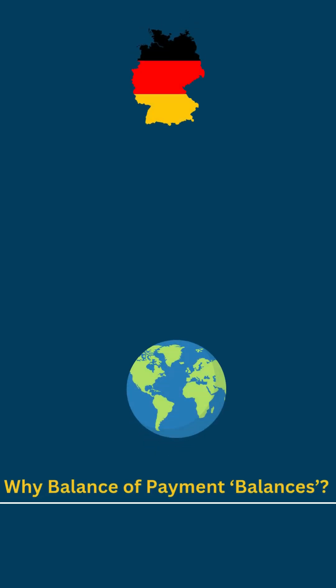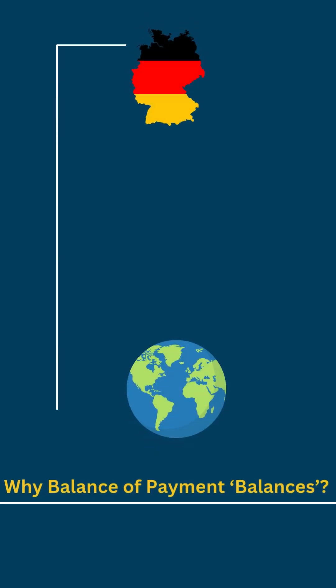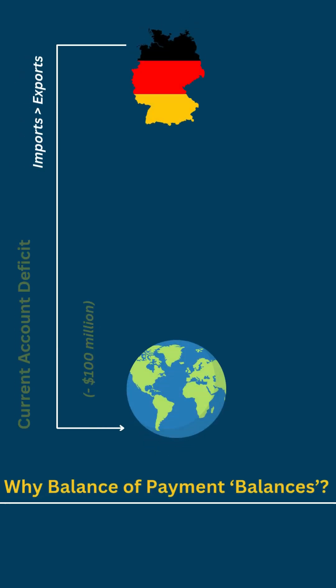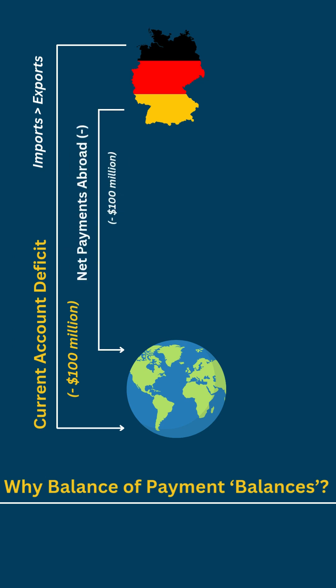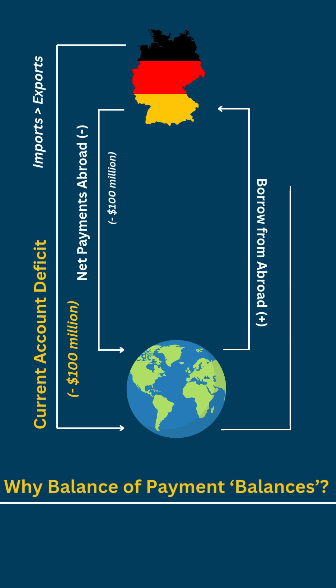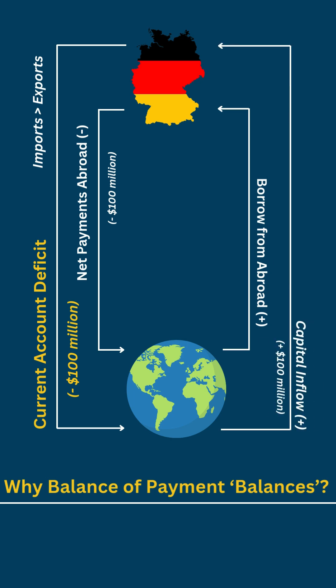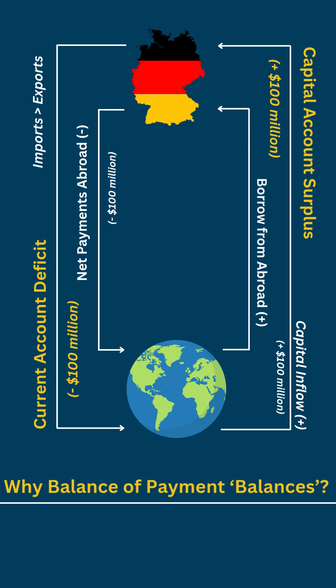Let's understand this intuitively. If a country imports more goods than it exports, it runs a current account deficit. Since the country is importing more, effectively it is paying out more money than it receives from exports. To pay this extra money, the country borrows from abroad. This means foreign capital is flowing into the country, which creates a corresponding surplus in the capital account. Thus the current account deficit is balanced by a capital account surplus.